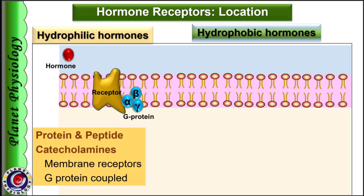Alpha S — S stands for stimulatory. Alpha I — I for inhibitory, and Alpha Q. Activation of Alpha S stimulates the enzyme adenyl cyclase, while activation of Alpha I inhibits adenyl cyclase. Alpha Q activates membrane bound phospholipases like phospholipase C. Details we shall study later in the video.